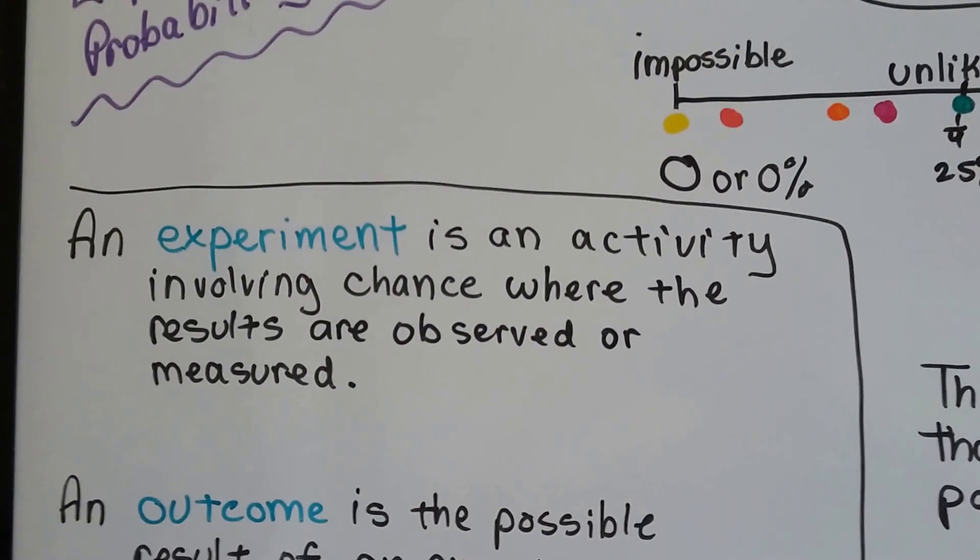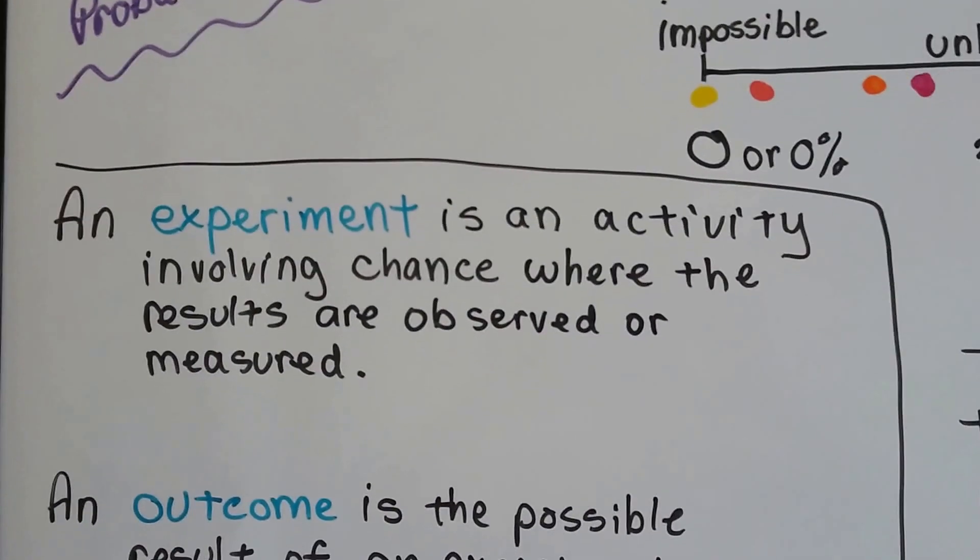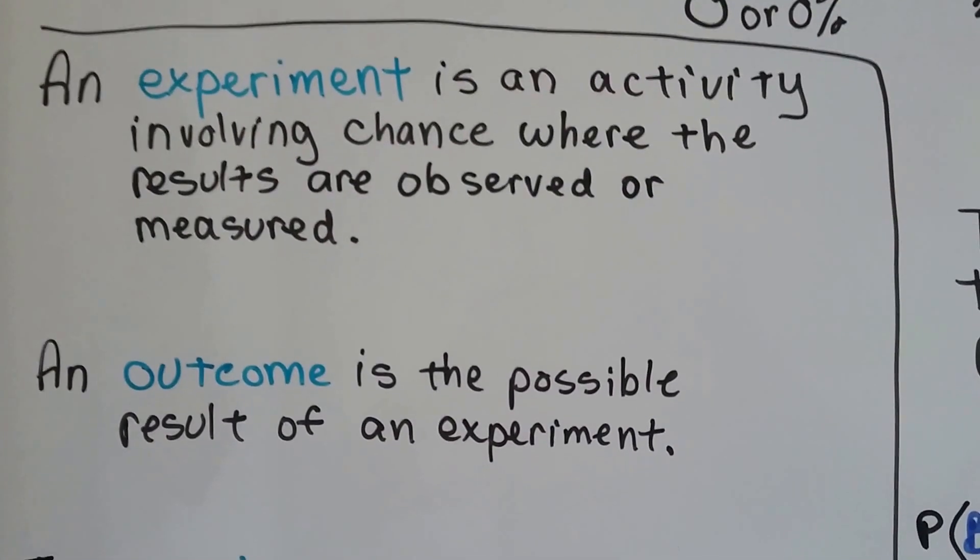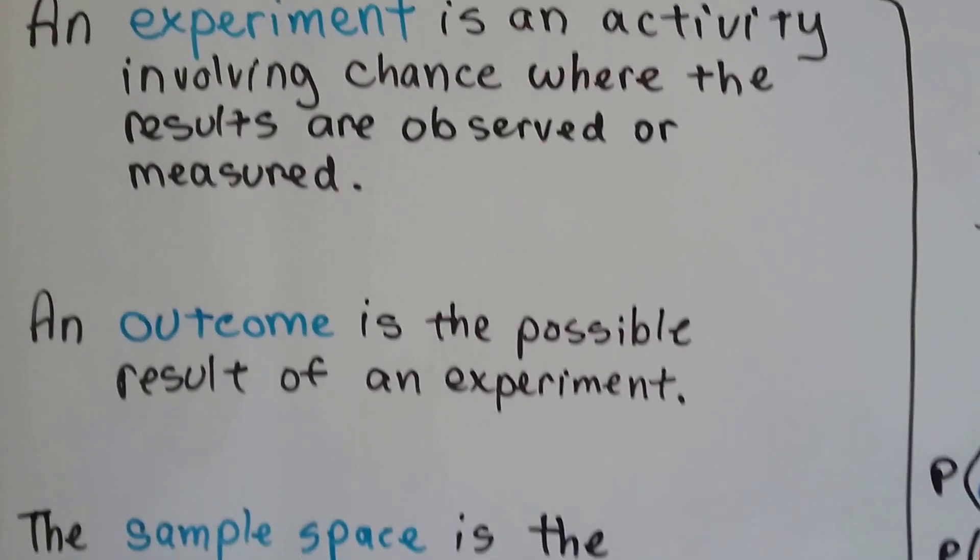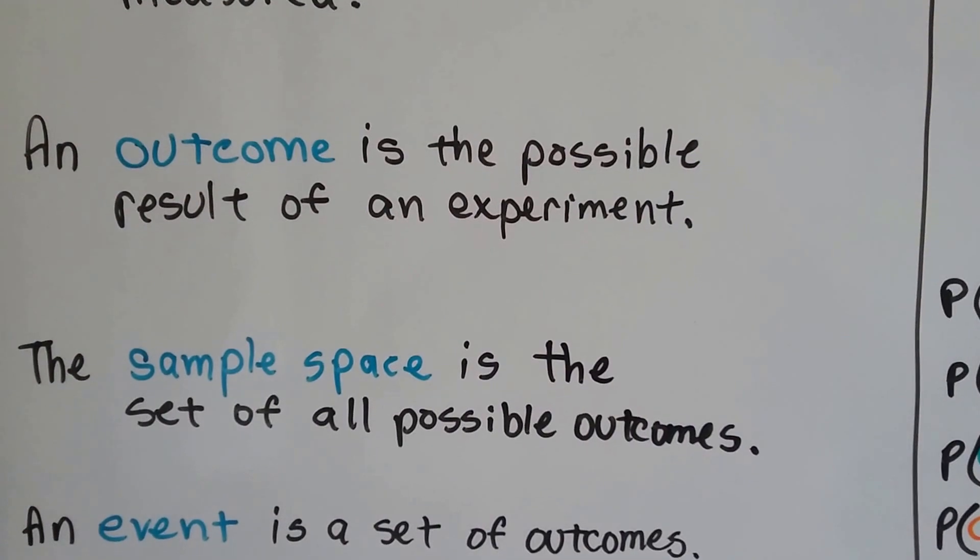An experiment is an activity involving chance where the results are observed or measured. We've done experiments in science. An outcome is the possible result of the experiment. A sample space is a set of all possible outcomes.